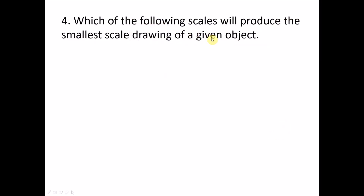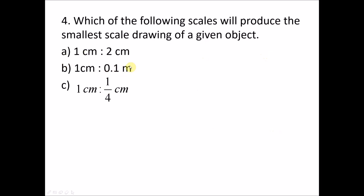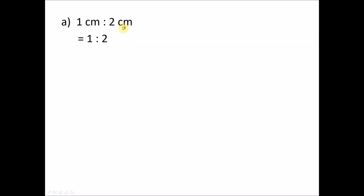Question number four: which of the following scales will produce the smallest scale drawing of a given object? We have three scales: A, B, and C. To compare scales, you need to make sure they all have the same unit first. Scale A is one centimeter to two centimeters, which simplifies to one to two. Scale B has different units — convert 0.1 meter to centimeters: 0.1 meter is 10 centimeters — so it simplifies to one to ten.